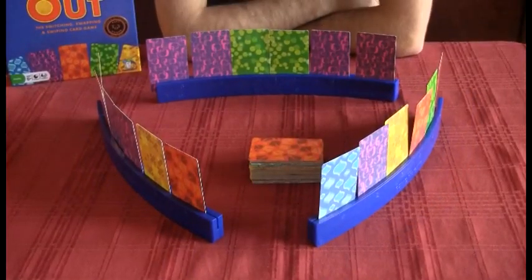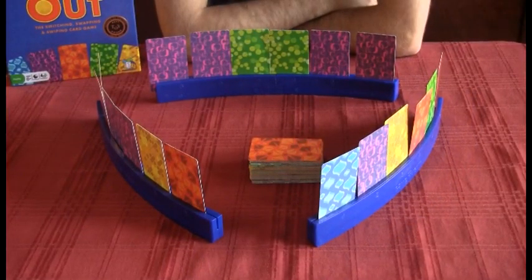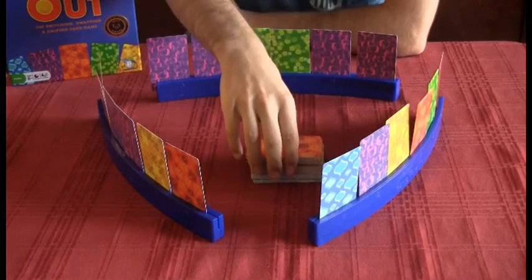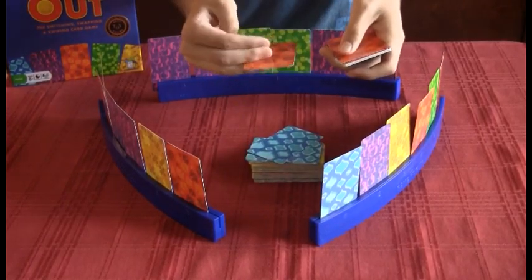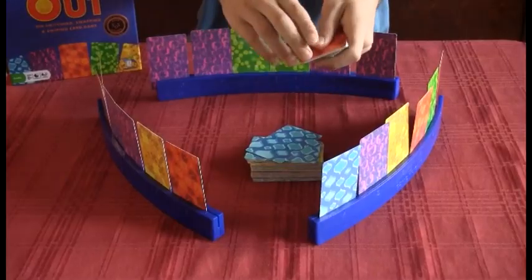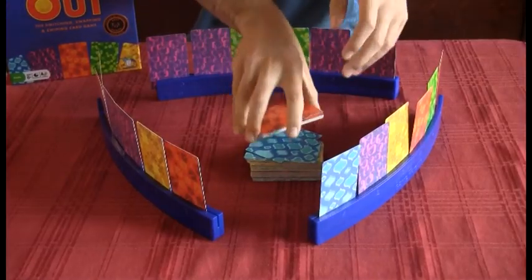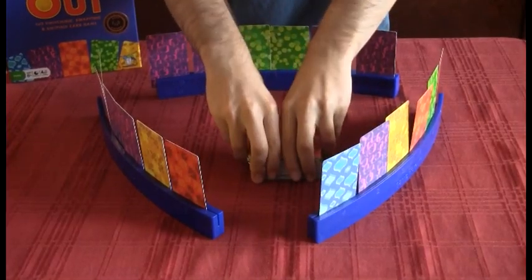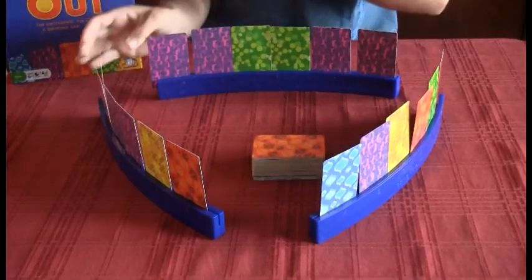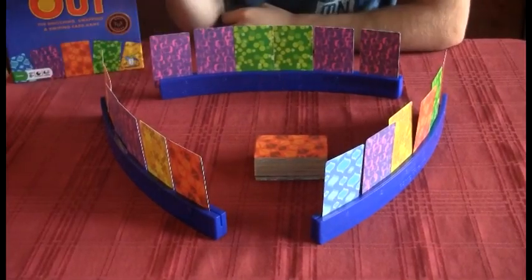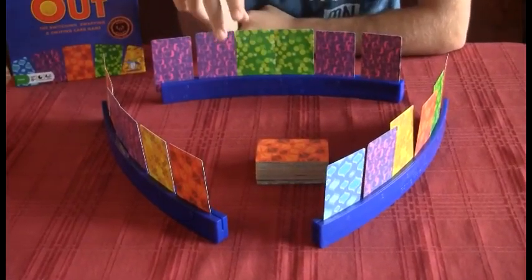So those all look different on the back? Yes, they are different on the back, and that's because these are all reversible cards. You'll notice that they have different patterns and different colors, and that is how you play the game. Oh, so kind of random, cool. Yeah, it's pretty nifty. So on your turn you have two actions.